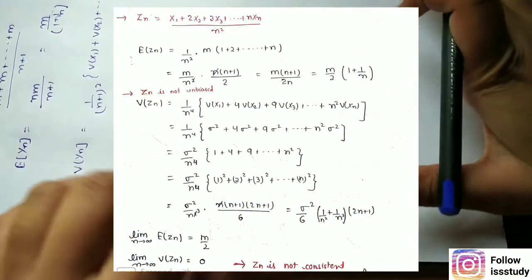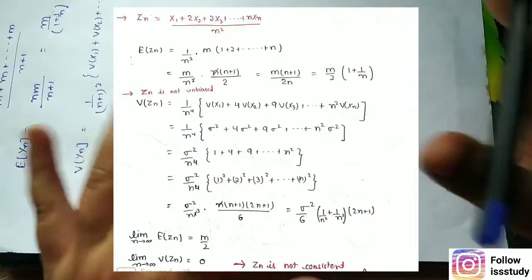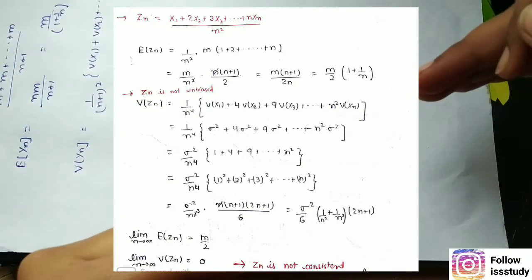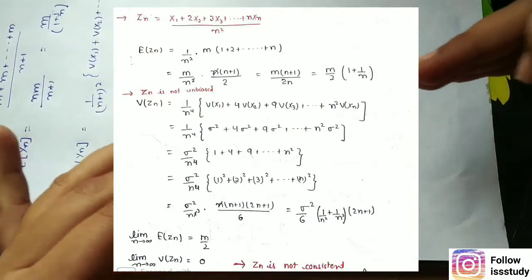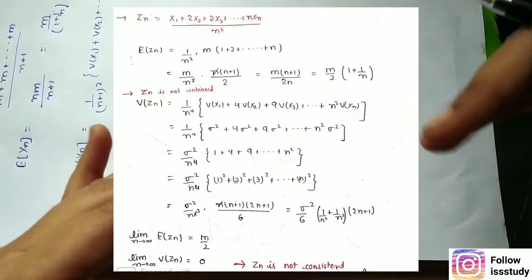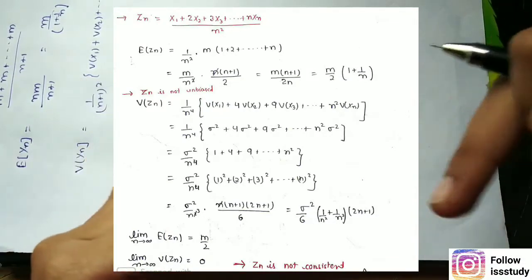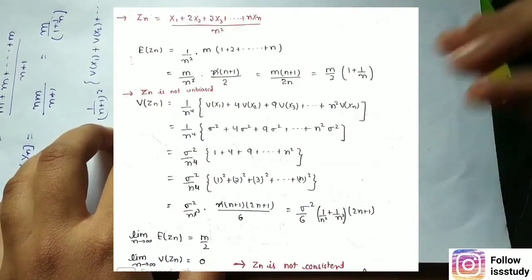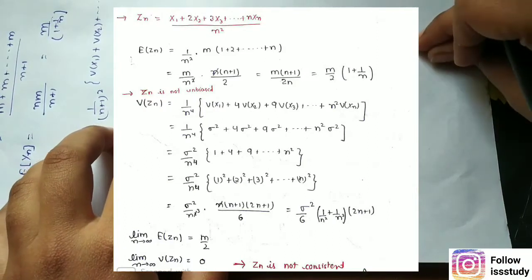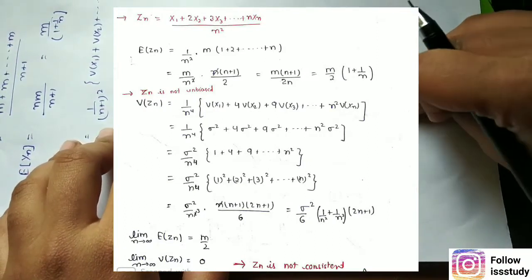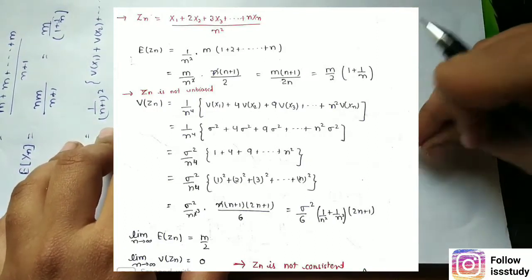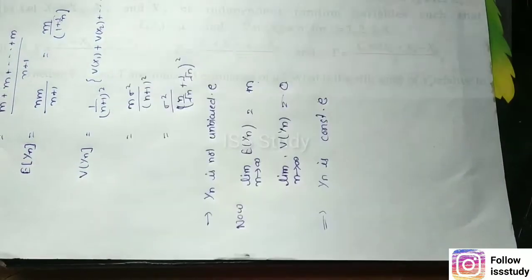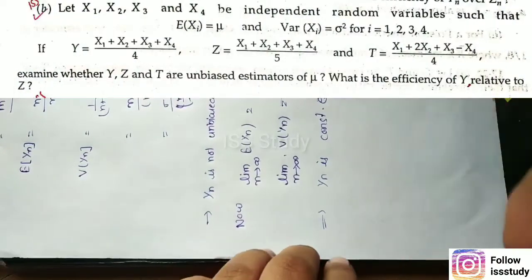We can see that zn is NOT an unbiased estimator because it does not estimate m directly. When we operated the limits, the limit of expectation of zn was m/2, not m, and the limit of variance of zn was 0. Since the limit of E[zn] equals m/2 and not m, zn is also NOT a consistent estimator of m.